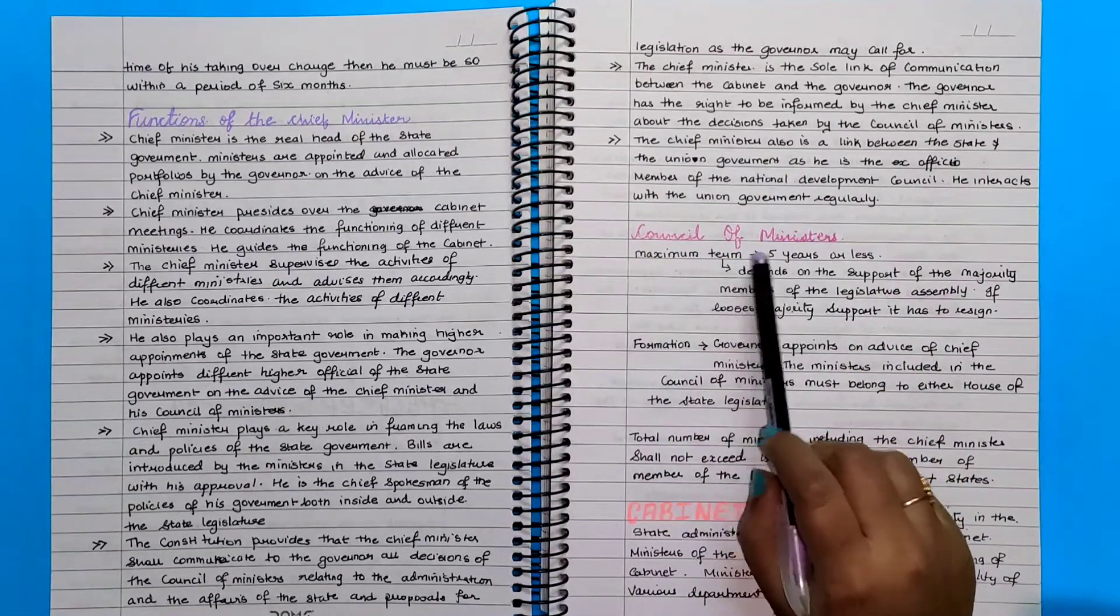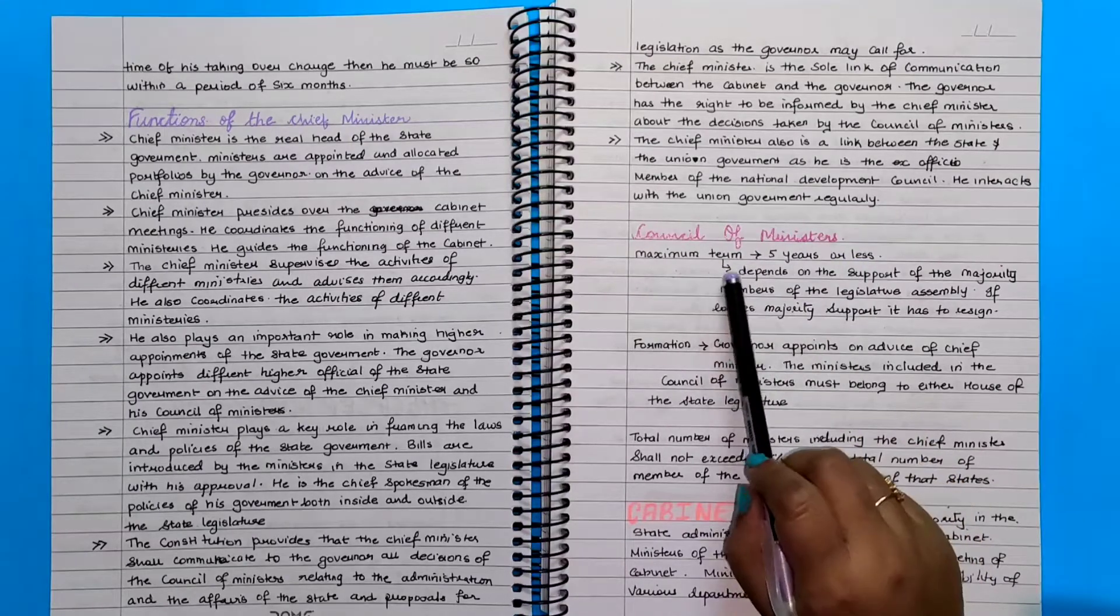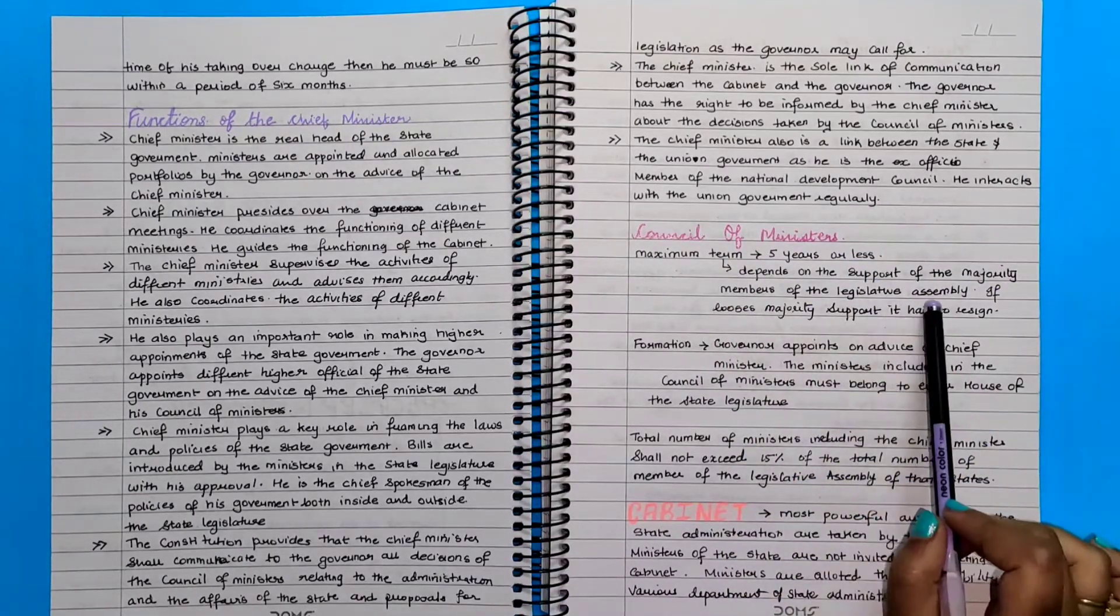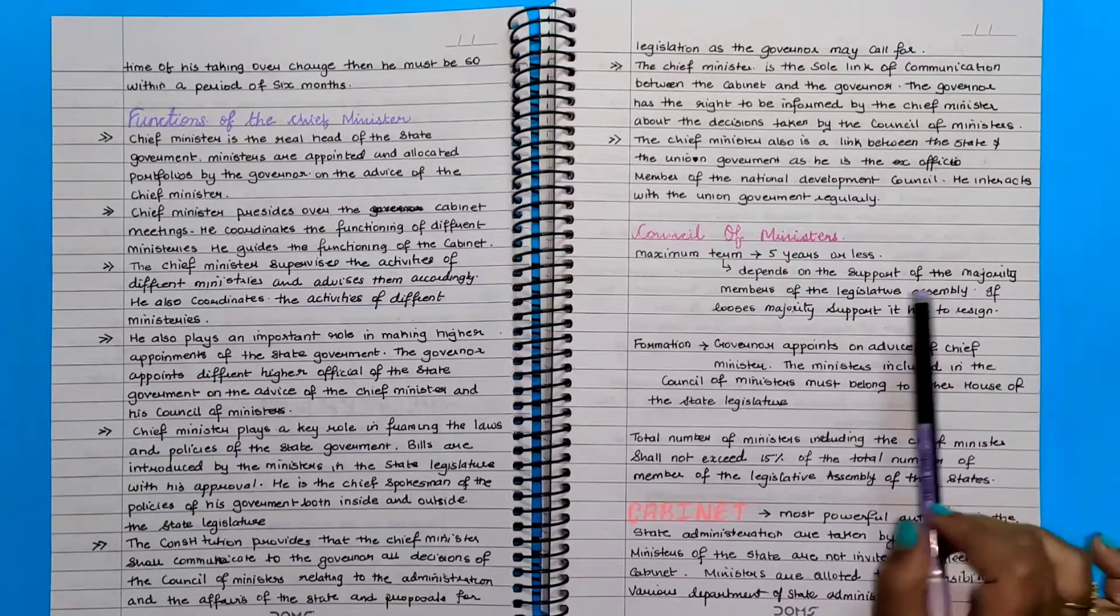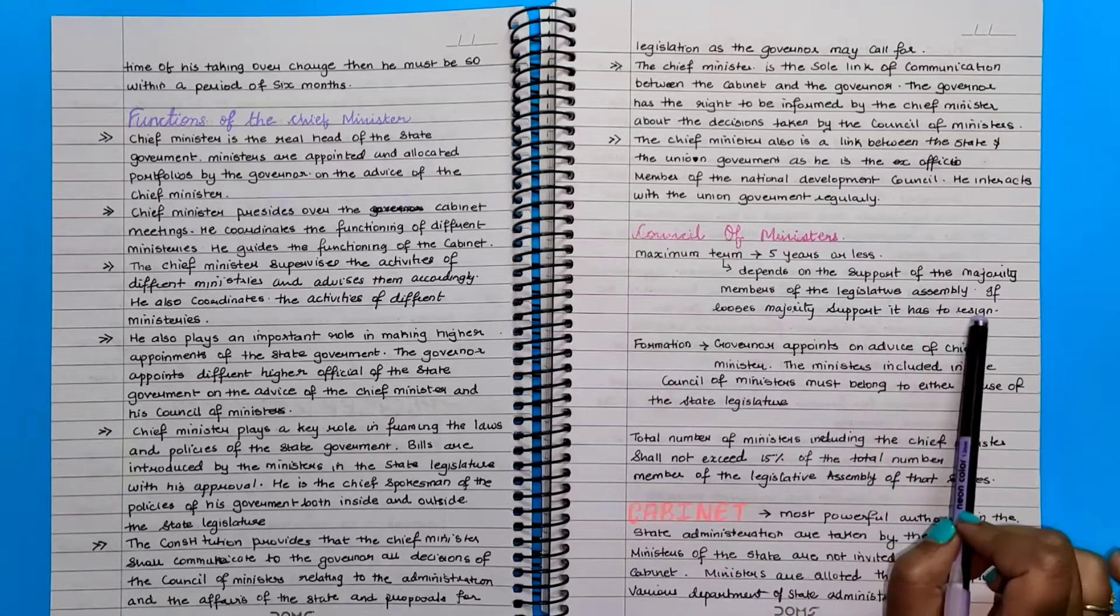Council of ministers' maximum term is five years or less. And the term depends on the support of the majority members of the legislative assembly. If it loses majority support, they have to resign.